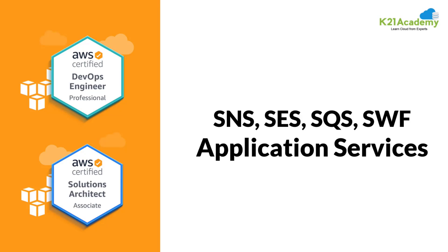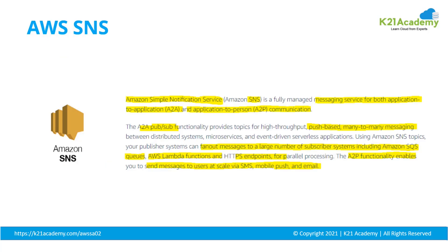In this lesson, we're going to look at some of the application services — things like SNS, Simple Notification Service; SES, Simple Email Service; SQS, Simple Queue Service; and Simple Workflow Service. SNS is a fully managed messaging service for both application-to-application and application-to-person communication. For example, if a new invoice is ready for approval, the application can send an email, SMS, or other notification to a person. Another way is application-to-application notification — if data is stored into a storage bucket, notify another system to pick it up or do some processing on the data.